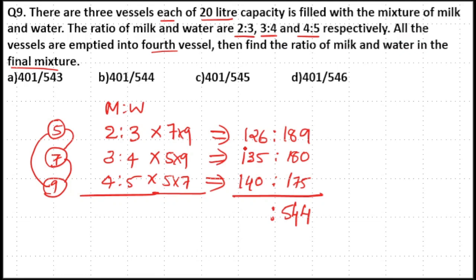Now 189 plus 180 plus 175 for water: 6 plus 5 is 11, 3 plus 3 is 6, plus 4 is 10. 3 plus 1 is 4. So 401 is to 544. Option B, 401 divided by 544 is your answer.